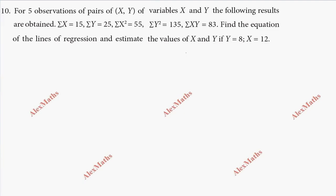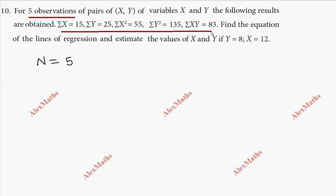Hi students, this is Alex here. Question number 5. Now, 5 observations are being put up here. So n order value 5, and we have sigma x, sigma y, sigma x square, sigma y square, sigma xy.